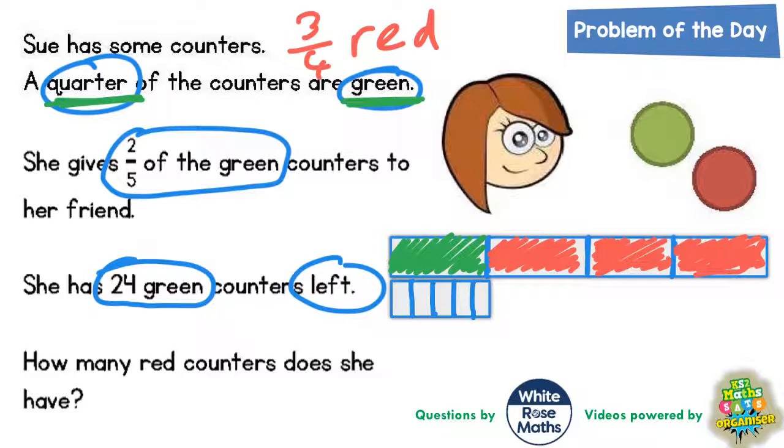So if she gives the two-fifths away, that will be those two sections she's giving away. And she's got three sections left. But it tells us that she's got 24 green counters left. So this 24 must be the amount she's got left there.